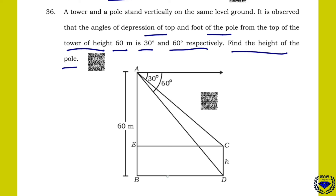It is observed that the angle of depression of the top and foot of the pole from the top of a tower of height 60 meters is 30 degrees and 60 degrees respectively. Find the height of the pole.